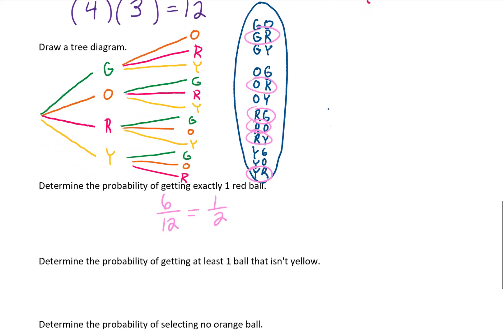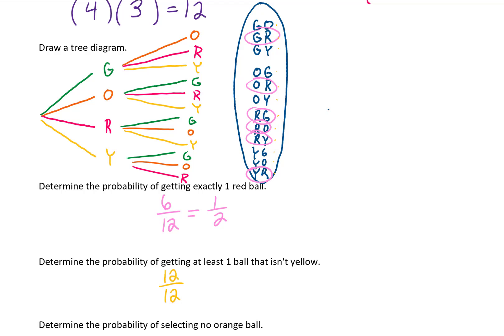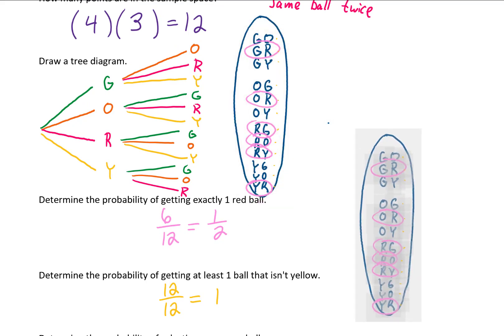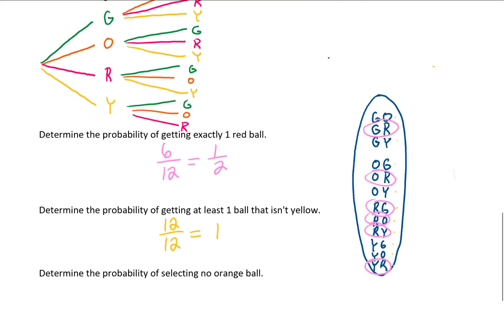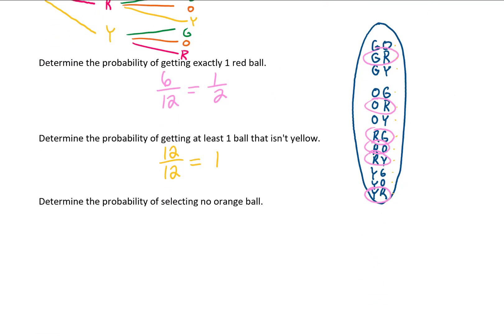Next, let's determine the probability of getting at least one ball that isn't yellow. Looking at all the options in our sample space, every single point has at least one ball that isn't yellow. That means all 12 out of 12 possible outcomes satisfy this condition, giving us a probability of 1, or a 100% chance. The last problem is to determine the probability of selecting no orange ball. Looking for points in the sample space that don't contain orange, we find six out of 12 possible outcomes, giving a probability of one half.